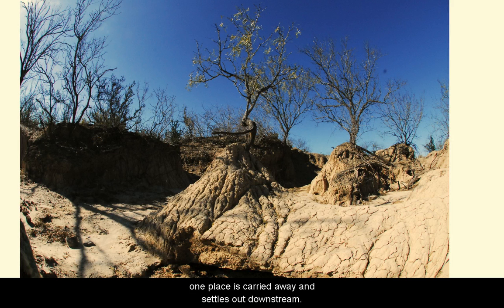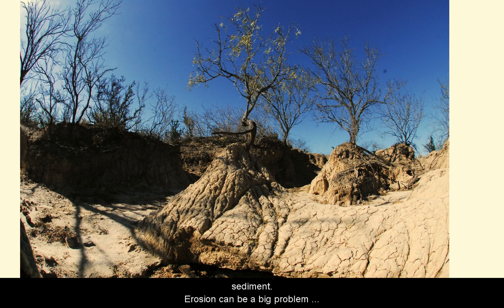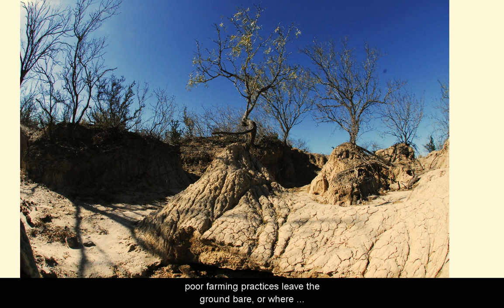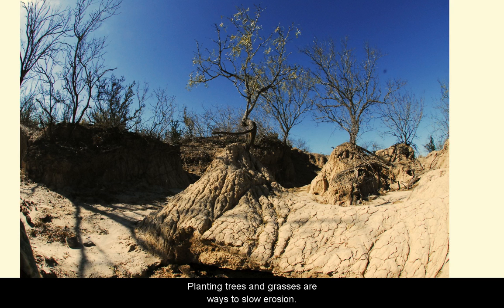Erosion can remove fertile soils from farmland and reduce water quality. Sediment that erodes from one place is carried away and settles out downstream. This can clog streams with gravel and fill reservoirs with sediment. Erosion can be a big problem in areas where too many trees are cut down, where poor farming practices leave the ground bare, or where construction exposes bare soils to wind and rain.